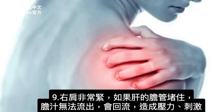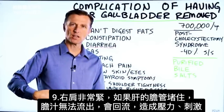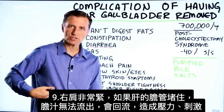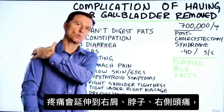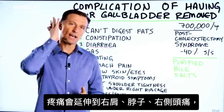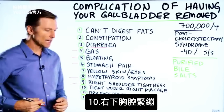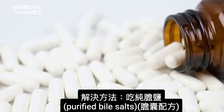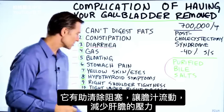Number nine: your right shoulder may be very tight. If there's congestion or some type of blockage of the ducts from your liver so you can't release the bile, it backs up and causes pressure and irritation, and it can create referral pain in your right shoulder up to your neck, even headaches on that side. It can also leave you with a tightness underneath your right rib cage. The solution is to take some purified bile salts because it will help remove the obstruction and open the flow so you have less pressure in that area.